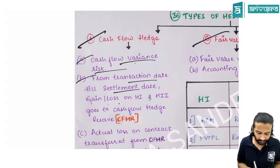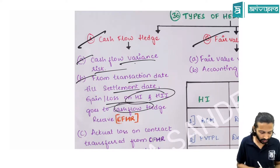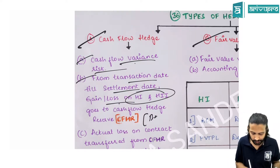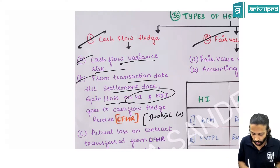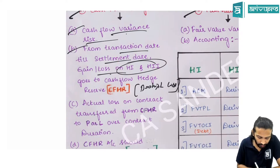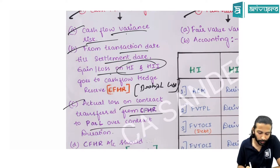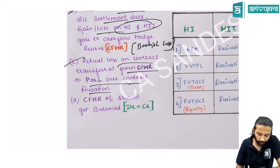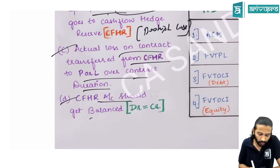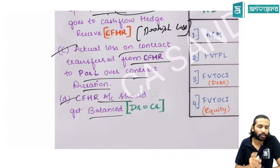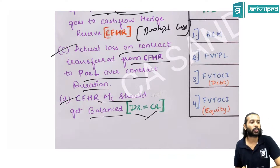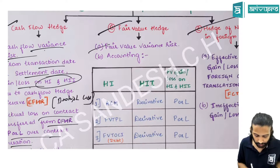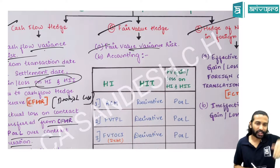Types of hedges: cash flow hedge, fair value hedge, and hedge of net investment in a foreign operation. Cash flow hedge covers cash flow variability risk. From transaction date to settlement date, gain/loss on both hedged item and hedging instrument goes to the cash flow hedge reserve (OCI), as these are bookish gains/losses. The actual loss on the contract is transferred from cash flow hedge reserve to P&L over the contract duration due to passage of time. At the end, the cash flow hedge reserve should be zero.